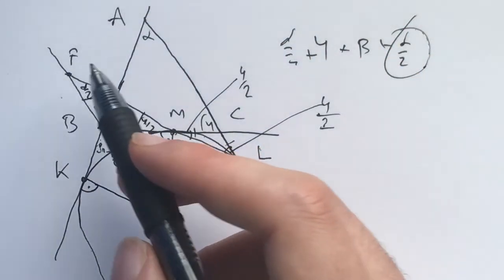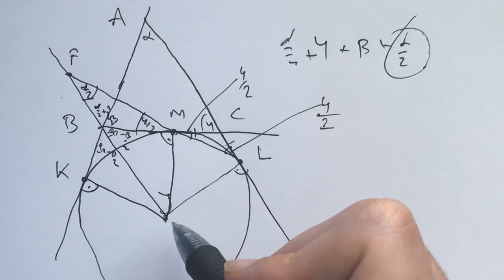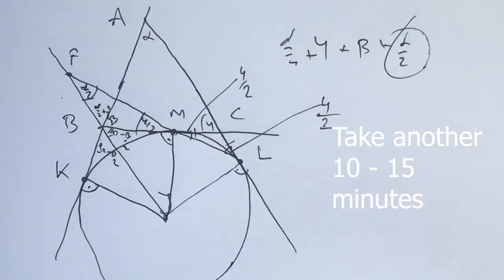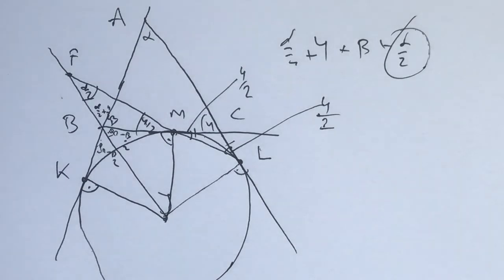What does this tell us? What does it mean that this angle right here, JFL or BFM, that this angle is alpha half? I invite you to take about 10 to 15 minutes and figure out what this means.